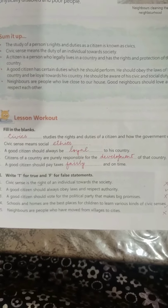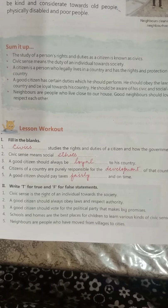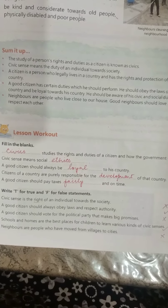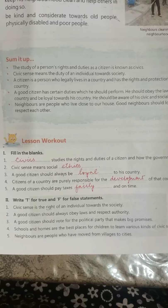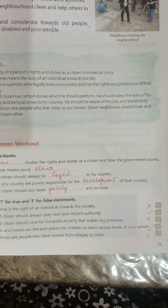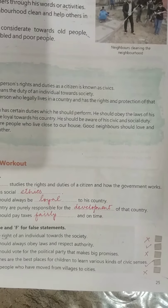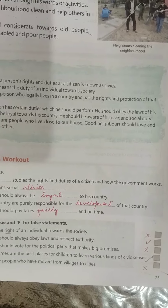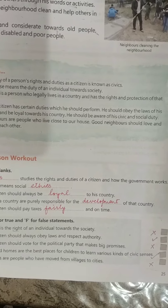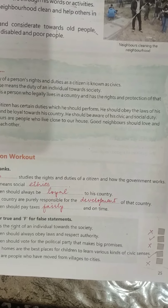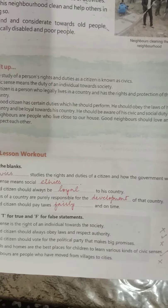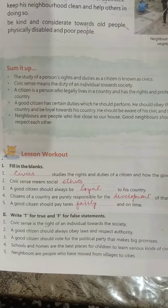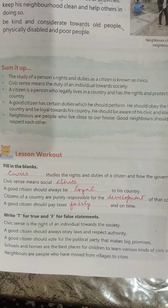Now let us move on to the true or false exercise. First: civic sense is the right of an individual towards the society — this is false; it should be duty, not right. Second: a good citizen should always obey laws and respect authority — this is true.